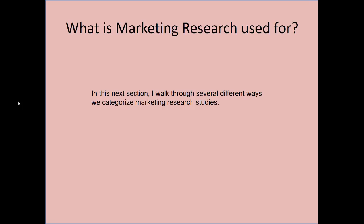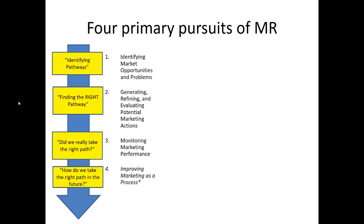Based on the previous definition, it should be apparent that marketing research can be used for anything that might confront a marketer. One way to organize marketing research is to consider the four primary pursuits — the types of problems marketing research often tries to solve. First, identifying market opportunities and problems. Second, generating, refining, and evaluating potential marketing actions. Third, monitoring marketing performance. And fourth, improving marketing as a process in and of itself.